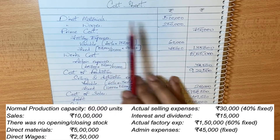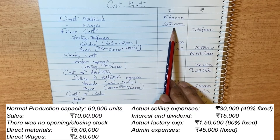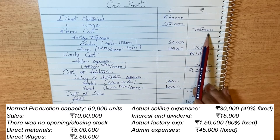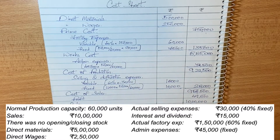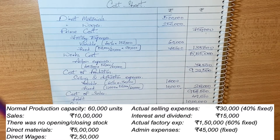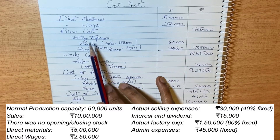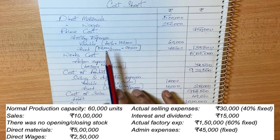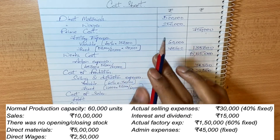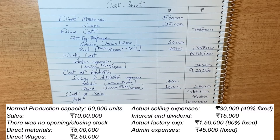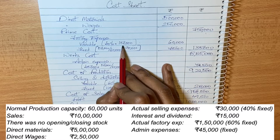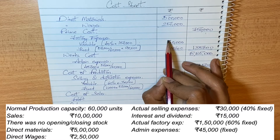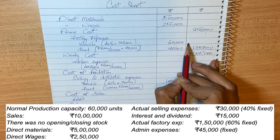Now for the cost sheet. Direct materials and wages give a prime cost of 7,50,000. Next, factory expenses of 1,50,000 — of which 60% are fixed and 40% are variable. The variable portion depends on actual production and is added directly.